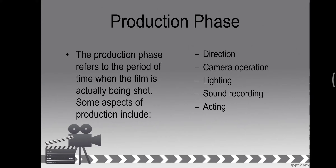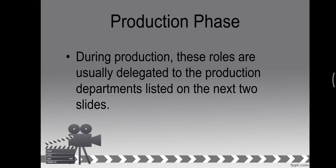This is the middle stage — this is where we are actually shooting. This is when you shoot every scene. During this phase, the main people involved are the directors, cameramen or women, the lighting crew, and of course the actors and actresses — they are the backbone of it all. During production, roles are usually delegated to production departments. We divide every task so the workflow is smoother, depending on each person's skills.